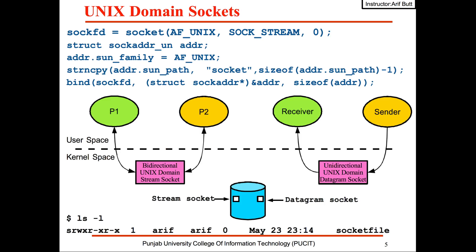This code snippet is used for this purpose. This time the first argument is AF_UNIX instead of AF_INET. Similarly, the second argument is either SOCK_STREAM or SOCK_DGRAM, whatever suits you.